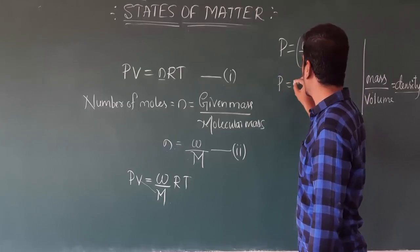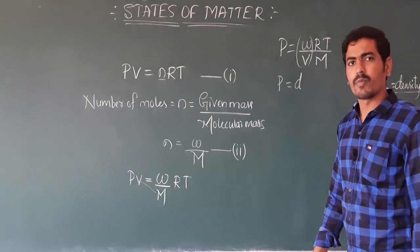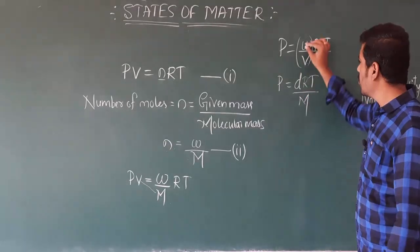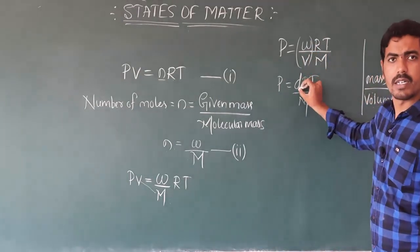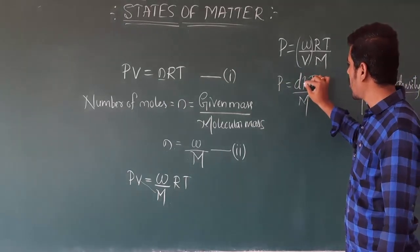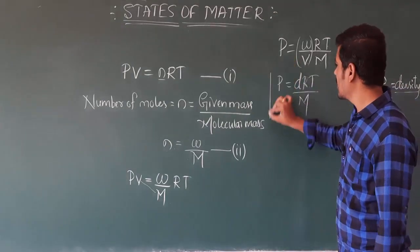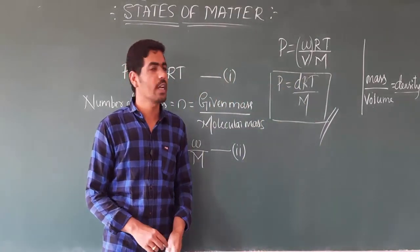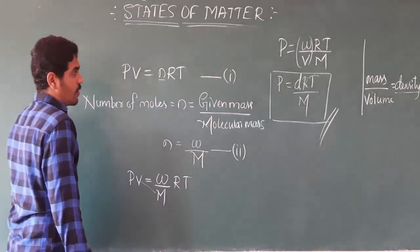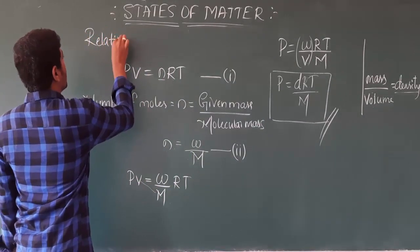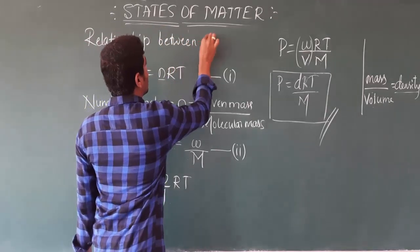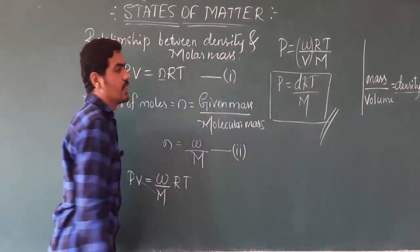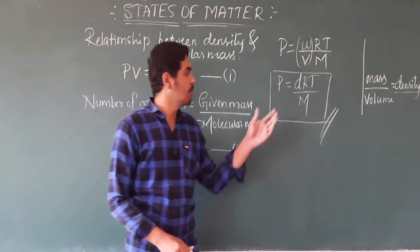Since mass divided by volume equals density, W/V can be replaced by D (density). Therefore: P = D R T / M. This equation gives the relationship between pressure, density, temperature, and molar mass. Remember this as another important equation: P = dRT/M.